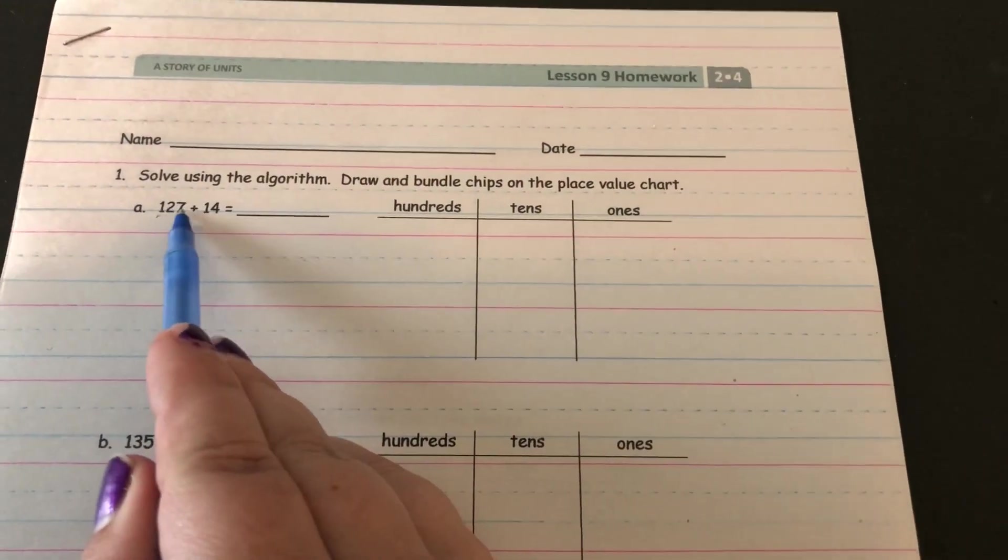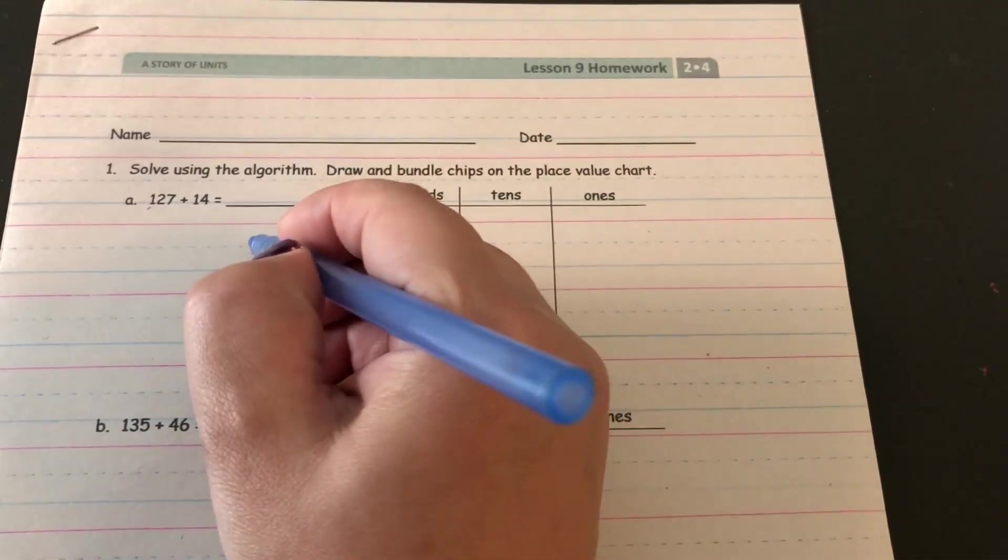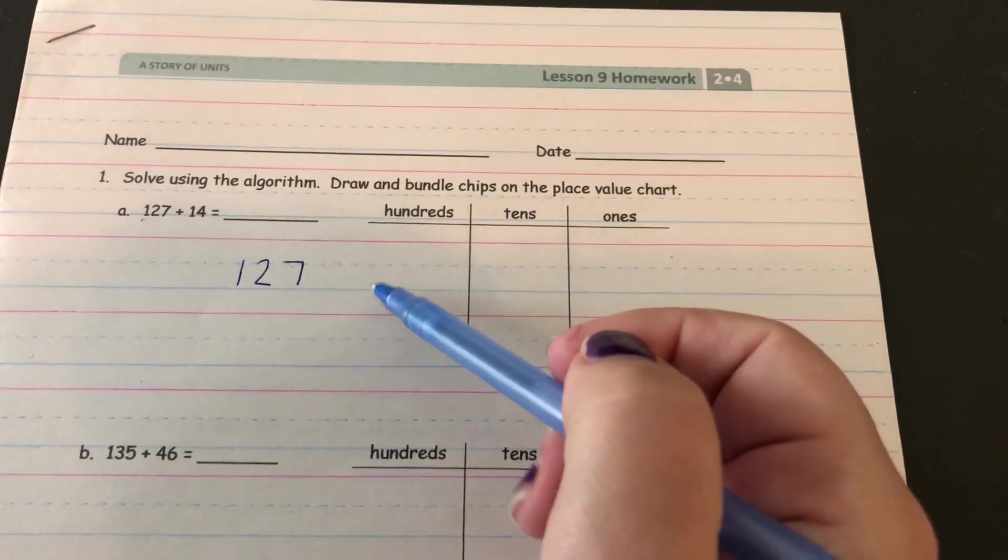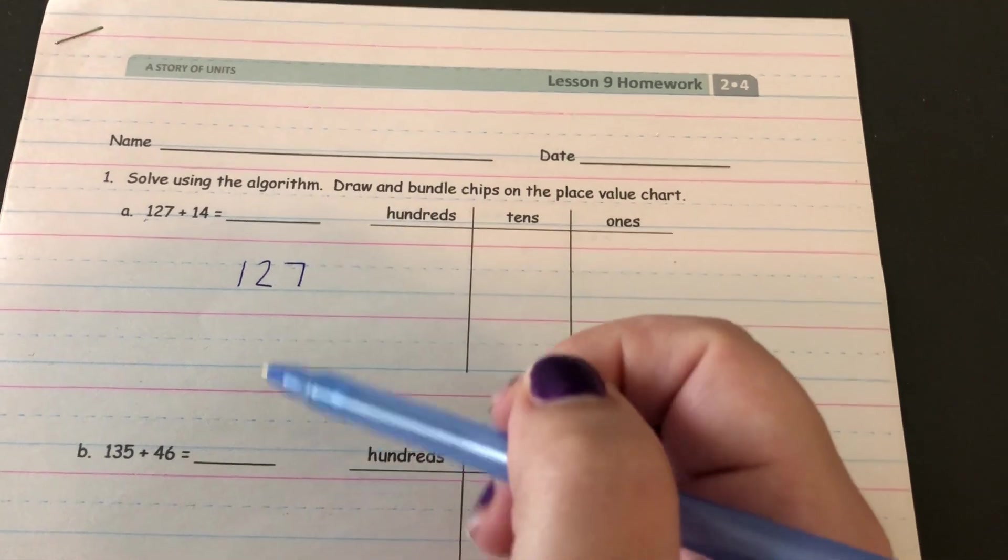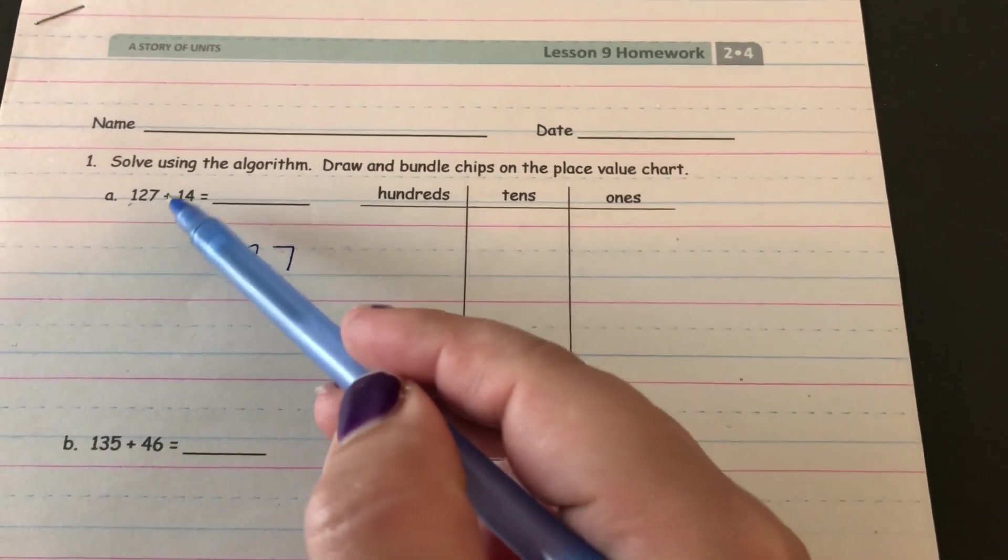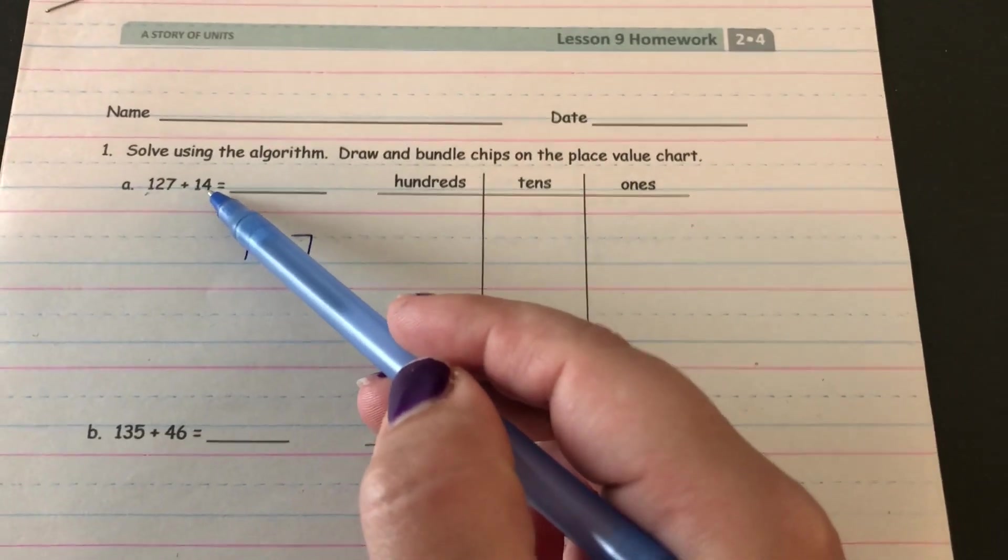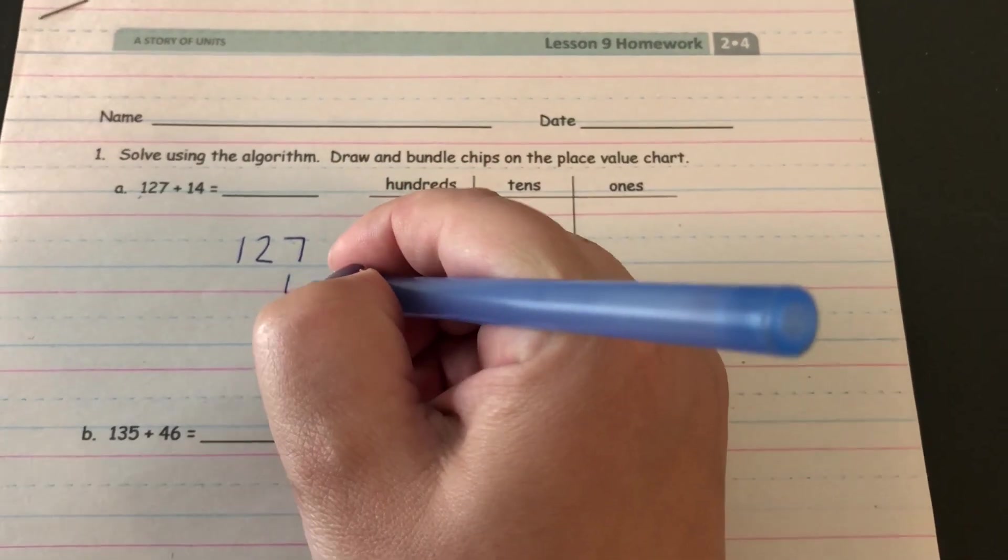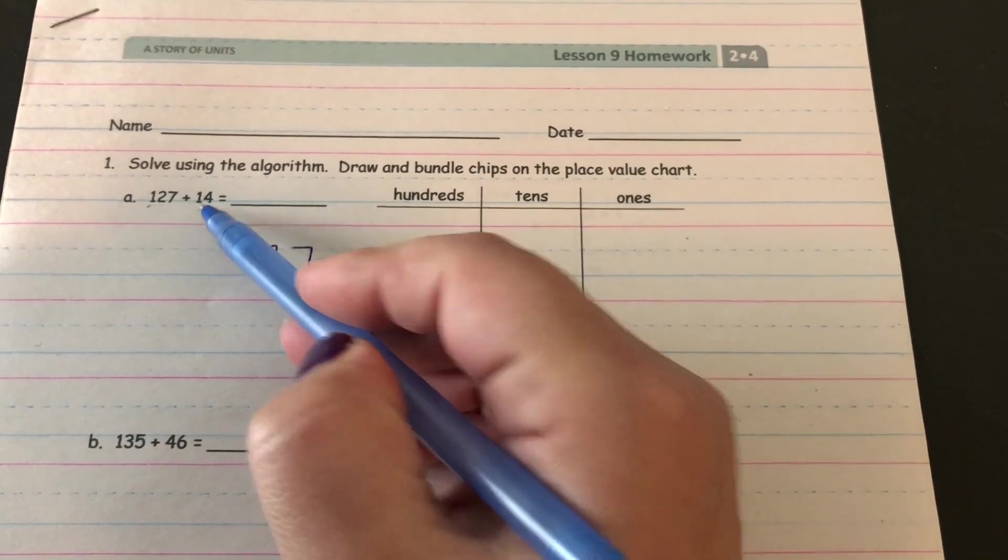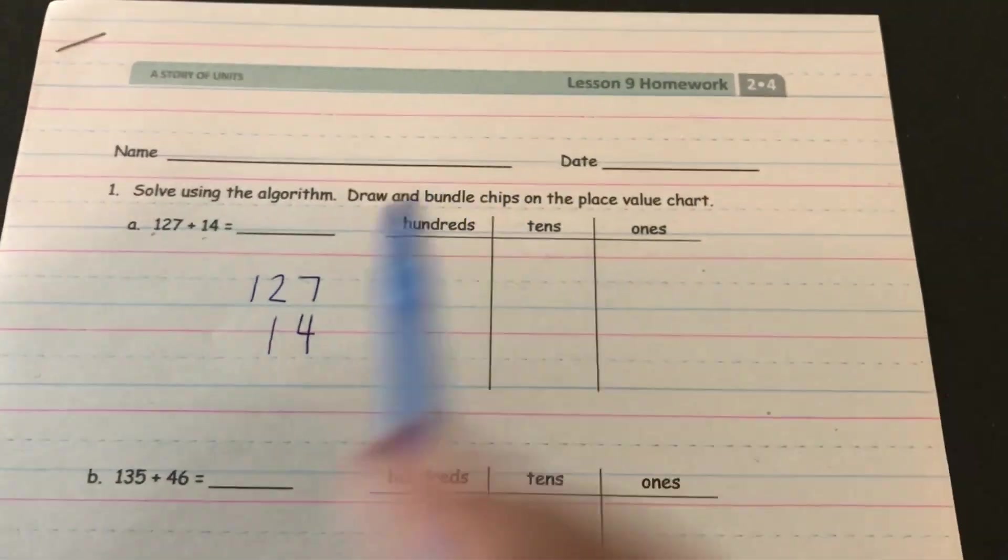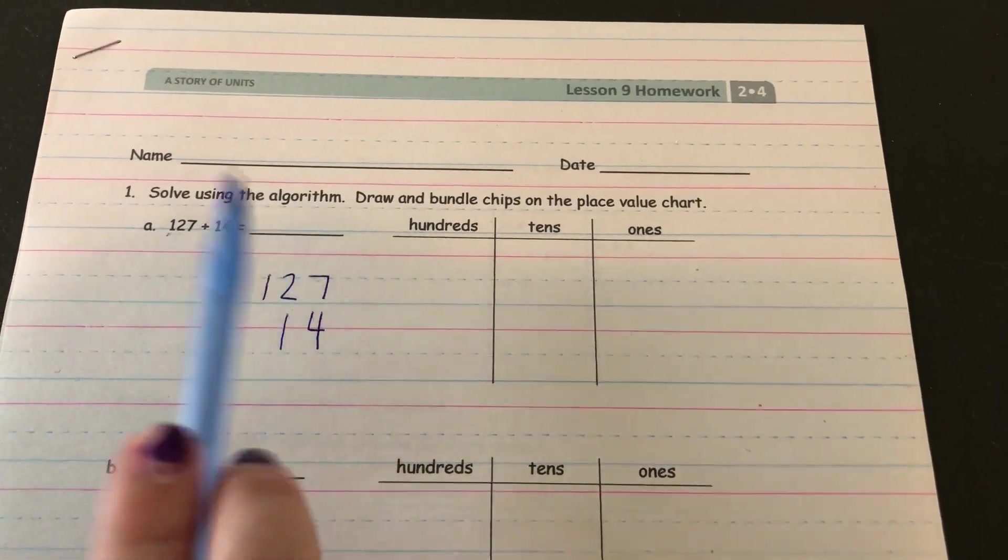So 127 plus 14. I'm going to start out by writing 127 and now I'm going to use our standard algorithm or a vertical form. I'm going to add 14. Make sure that you line up four ones underneath the seven ones and one ten underneath the two tens. So this is how it needs to be lined up with the place values in the right spot.